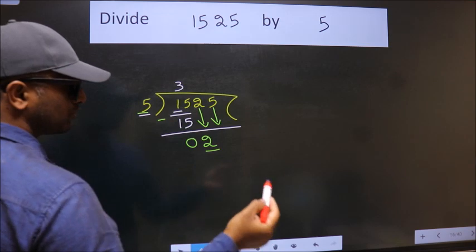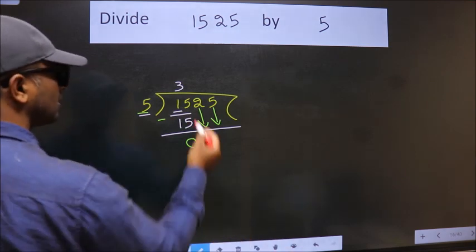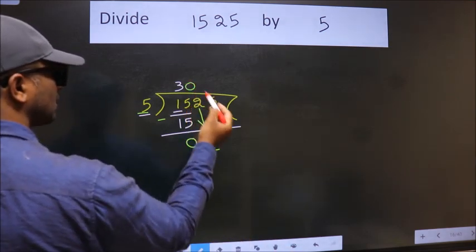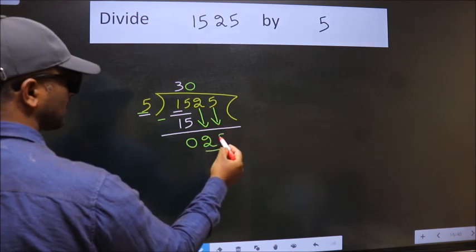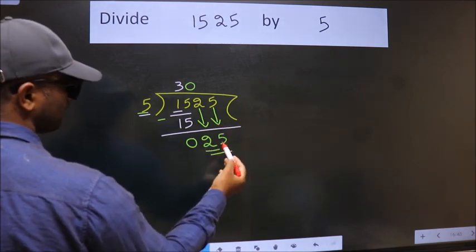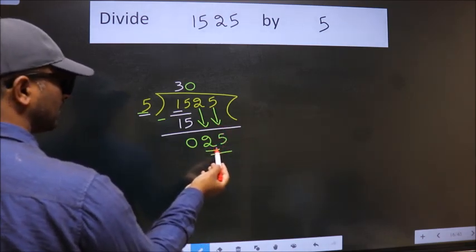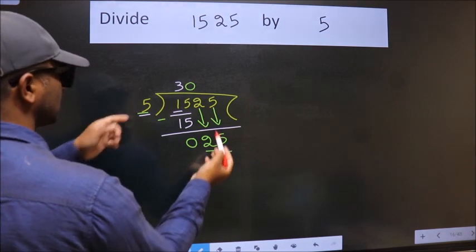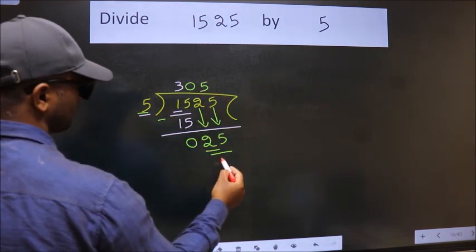The rule to bring down the second number is to put 0 here. Then only we can bring this number down. So, 25. When do we get 25 in the 5 table? 5 times 5 is 25.